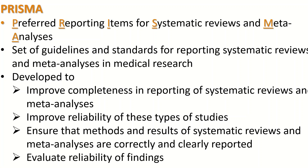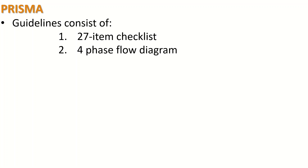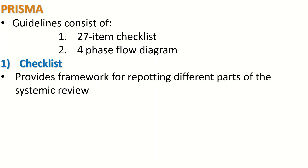PRISMA also helps evaluate the reliability of findings. PRISMA is a guideline that consists of two parts: the first part is a 27-item checklist, and the second part is a four-phase flow diagram. This checklist provides a framework for reporting different parts of the systematic review.